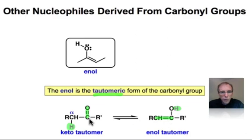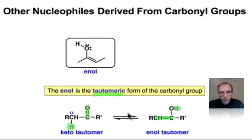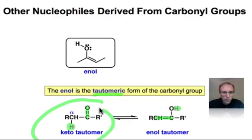Because of the much greater stability of the carbon-oxygen double bond — the carbon-oxygen bond strength is much larger than the carbon-carbon bond strength — the equilibrium for this tautomeric form is almost always going to favor the keto as opposed to the enol tautomer.